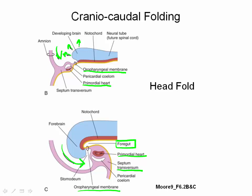Organs that are derived from the foregut include the pharynx, esophagus, stomach, and duodenum. It also gives rise to non-digestive organs, such as the larynx and tracheobronchial tree of the respiratory system.